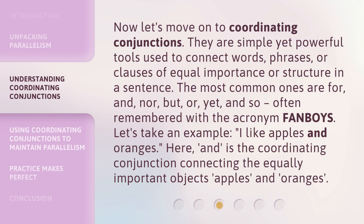Let's take an example: 'I like apples and oranges.' Here, 'and' is the coordinating conjunction connecting the equally important objects, apples and oranges.